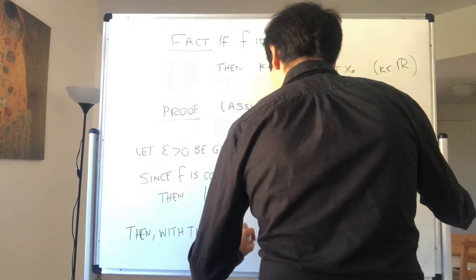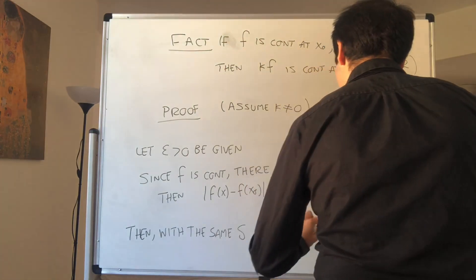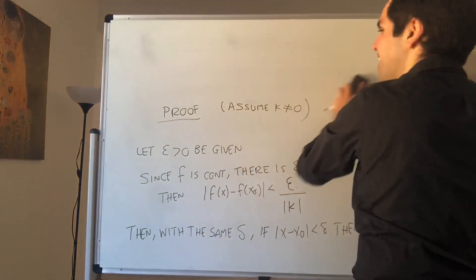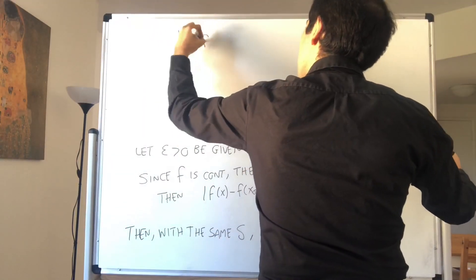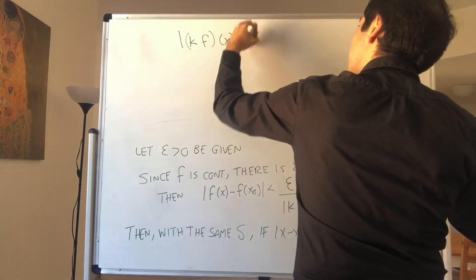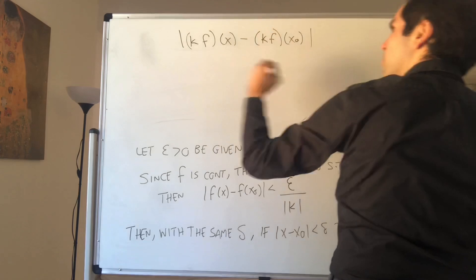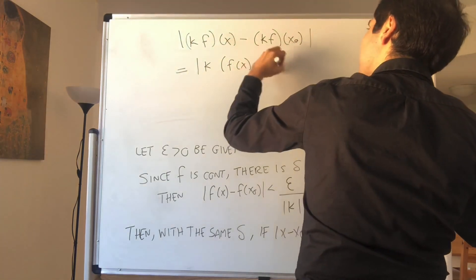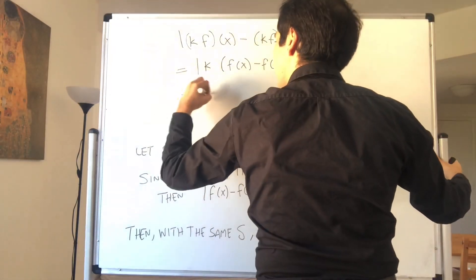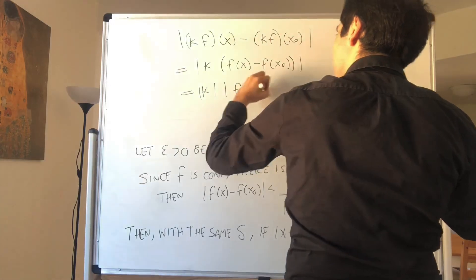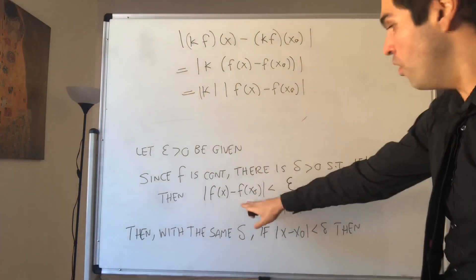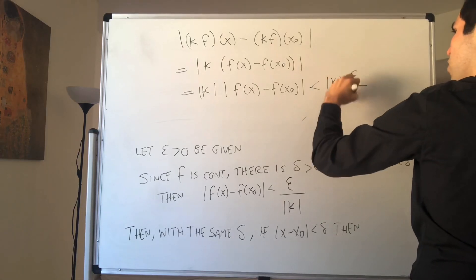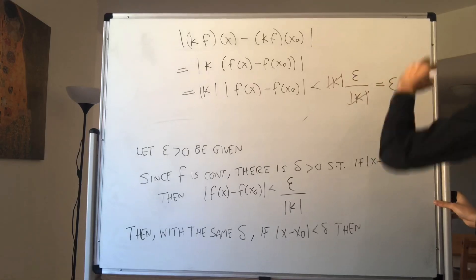Then with that same delta, if |x minus x naught| is less than delta, we estimate |kf(x) minus kf(x naught)|. The k just factors out, so it's |k| times |f(x) minus f(x naught)|. That is less than |k| times epsilon over |k|. This cancels out, and we have satisfied epsilon.